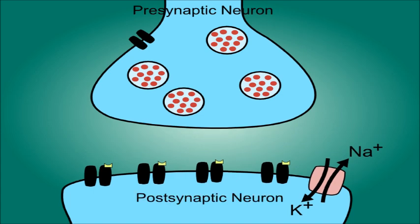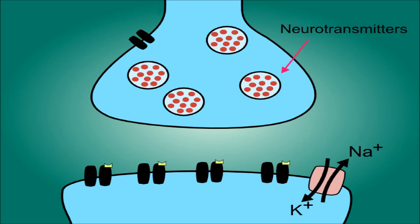The axon terminal is filled with vesicles containing neurotransmitters such as acetylcholine, dopamine, and serotonin, just to mention a few. These neurotransmitters are used to stimulate the postsynaptic neuron.